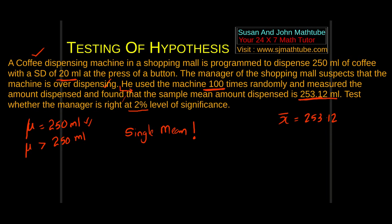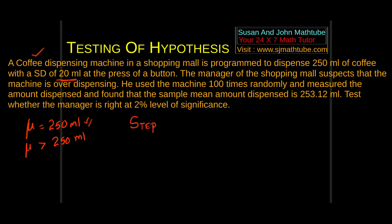Let's start with the procedure. Step number 1 means we write the null hypothesis and alternative hypothesis. Null hypothesis means the proposed value, or the manufacturer's claim — whatever the machine is being programmed to do. So that is μ = 250 ml.